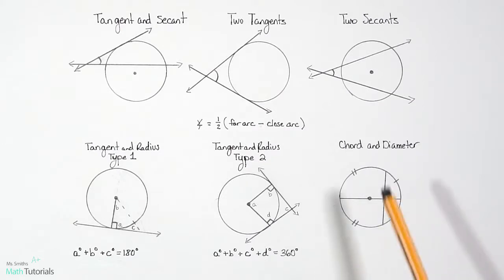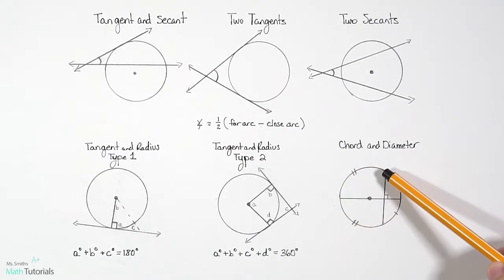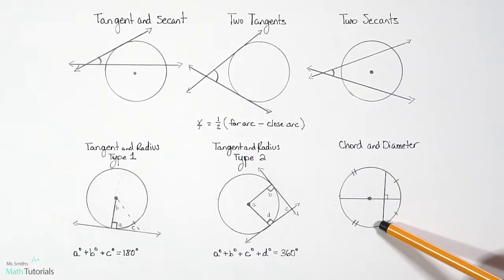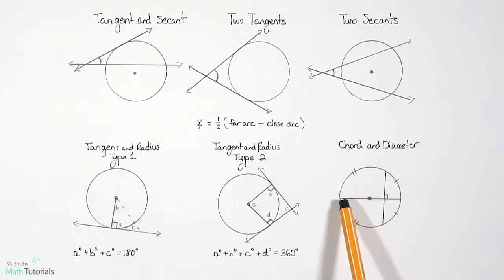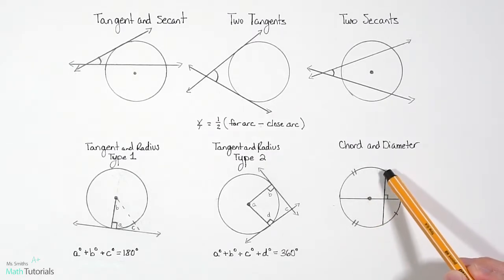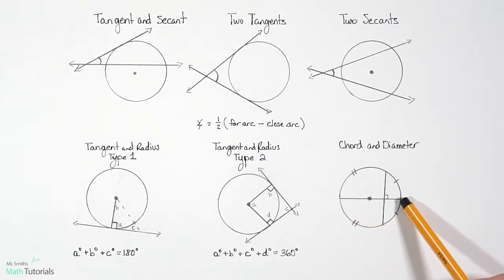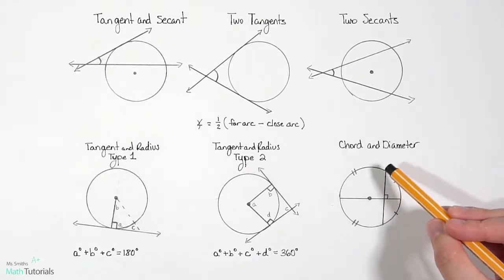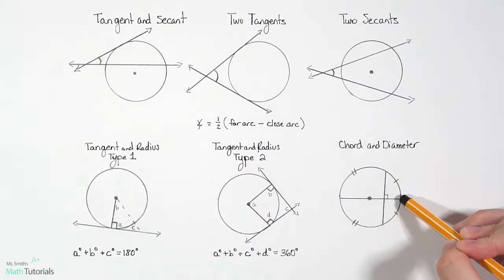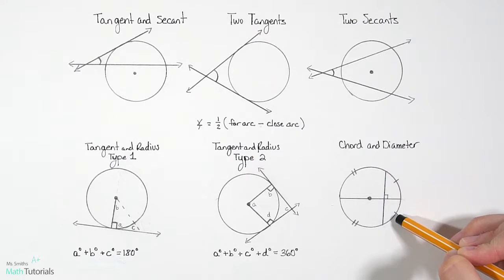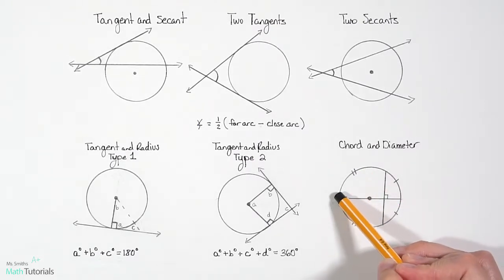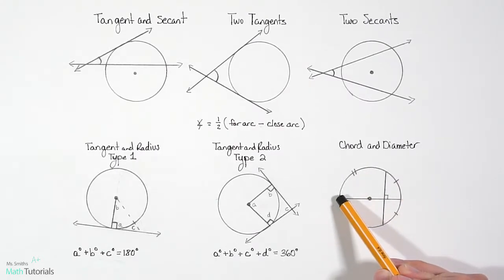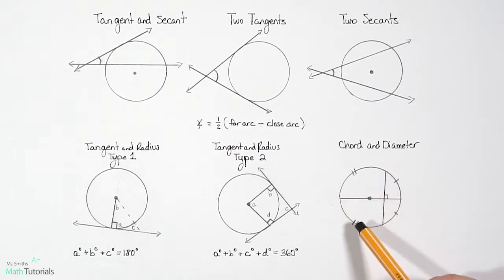The last type of relationship is a chord and a diameter. The chord cuts through the circle but not through the center, while the diameter does cut through the center. They have a perpendicular relationship — they form a 90-degree angle. This means the arc measure from here to here is congruent to the arc measure from here to here, shown with tick marks, and likewise the other pair of arc measures are congruent, shown with double tick marks.